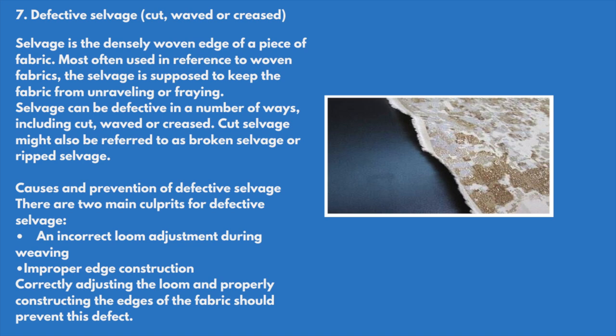Defective selvage — cut, waved, or creased selvage: the selvage is the densely woven edge of a piece of fabric, most often referenced in woven fabrics. The selvage is supposed to keep the fabric from unraveling or fraying. Selvage can be defective in a number of ways including cut, waved, or creased. Cut selvage might also be referred to as broken or ripped selvage. The two main culprits are incorrect loom adjustment during weaving and improper edge construction.